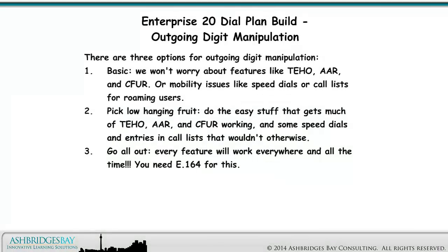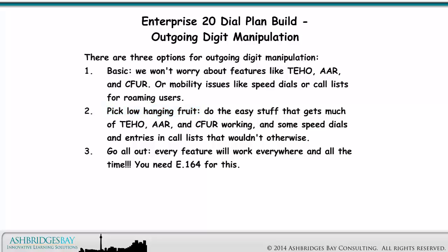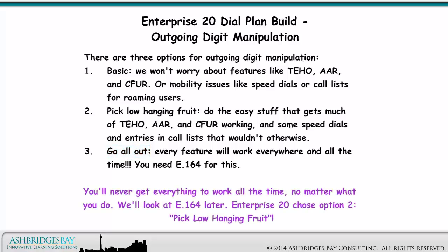There are three options for outgoing digit manipulation. Option one is basic — we won't worry about features like tail-end hop-off, AAR, and CFIR, or mobility issues like speed dials or call lists for roaming users. Option two is pick low-hanging fruit: do the easy stuff that gets much of T-HO, AAR, and CFIR working, and some speed dials and entries in call lists that wouldn't otherwise. Option three is go all out — every feature will work everywhere, all the time, and you need E.164 for this. You'll never get everything to work all the time no matter what you do. We'll look at E.164 later. Enterprise 20 chose Option 2: pick low-hanging fruit.